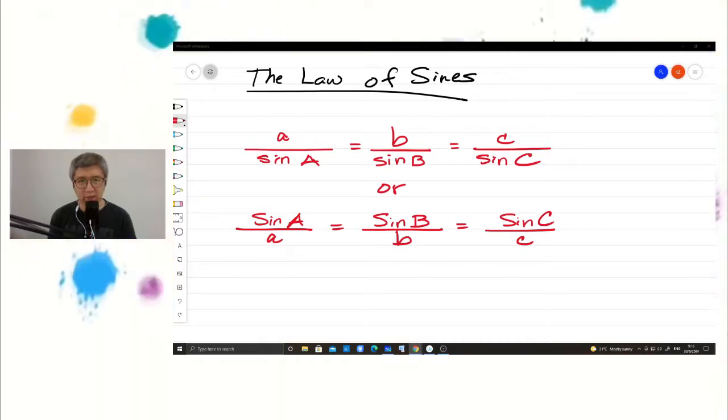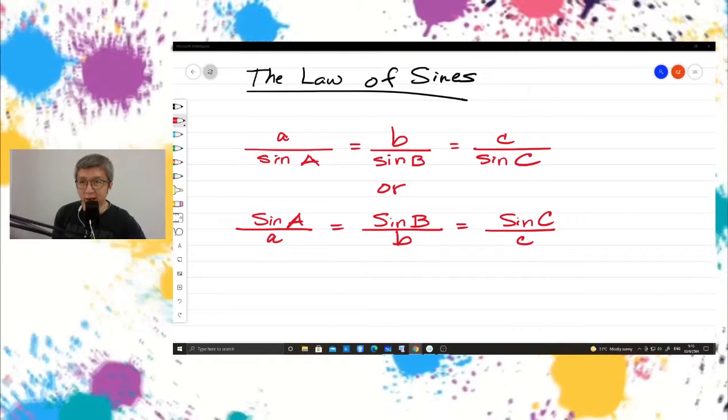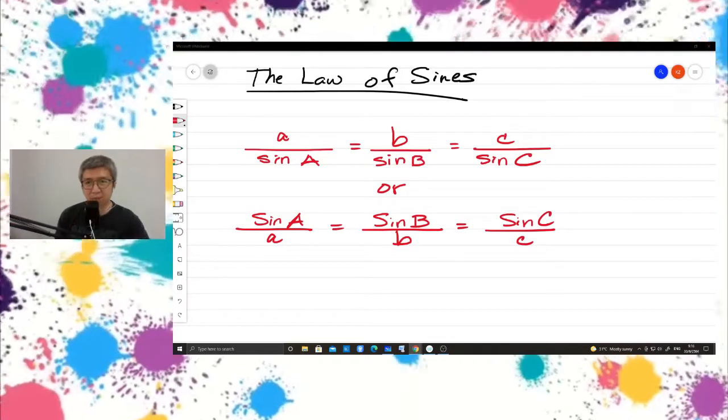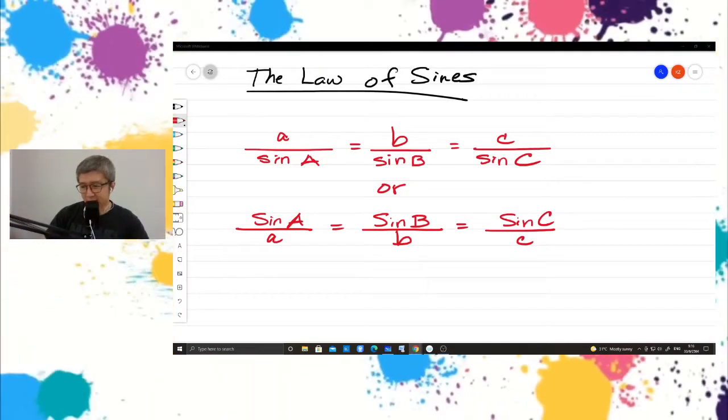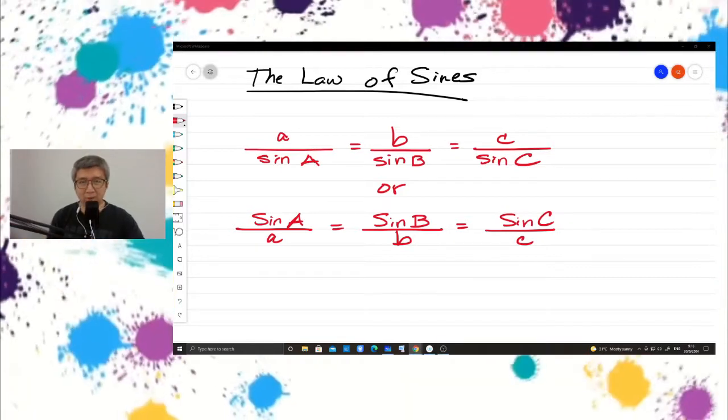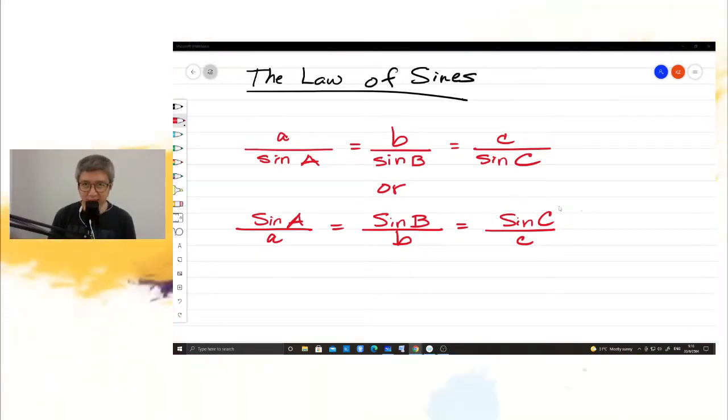We use this law to solve a triangle which is not a right triangle. All kinds of triangles. We can use this to solve the sides and angles of a triangle. So last week or the previous lesson, we discussed only right triangles. But this one, they are not right triangles. But you can apply this also in right triangle.